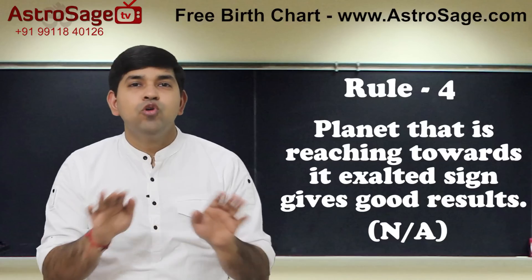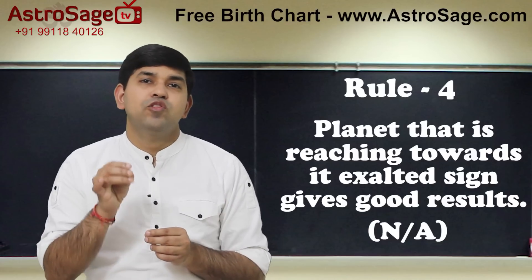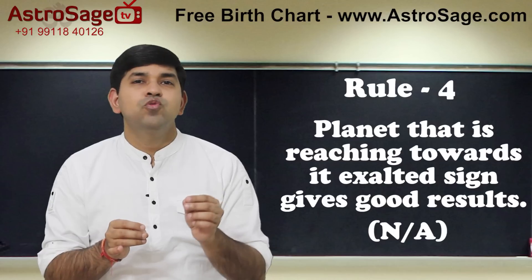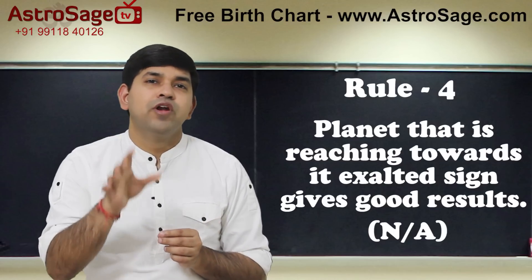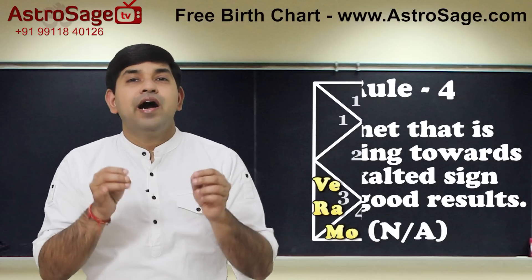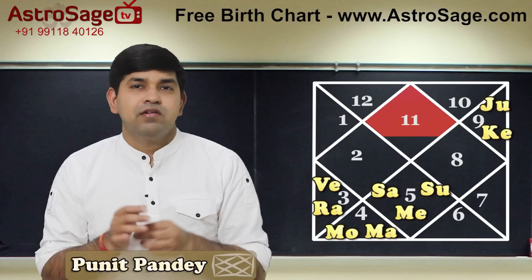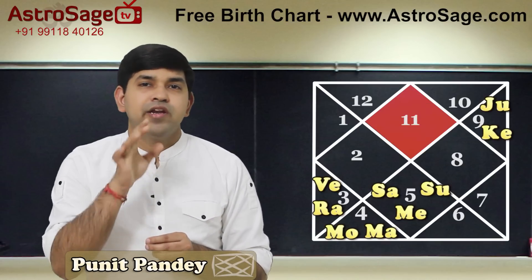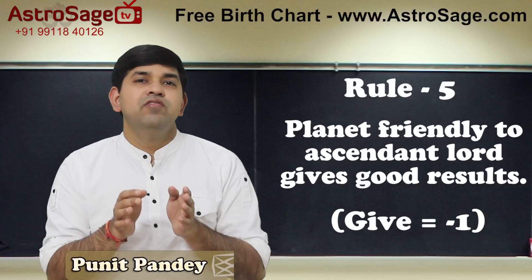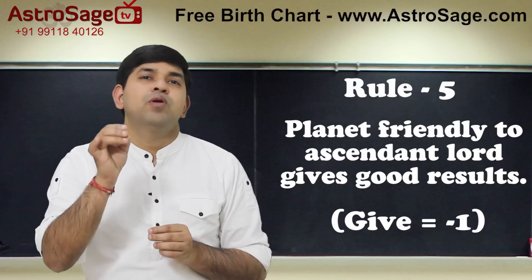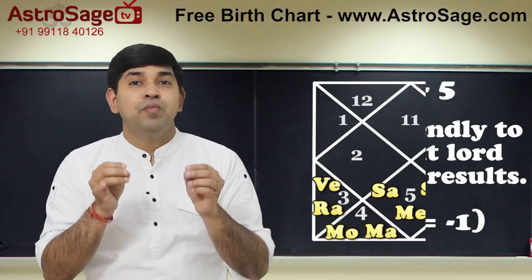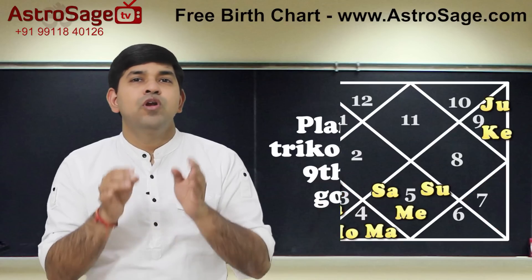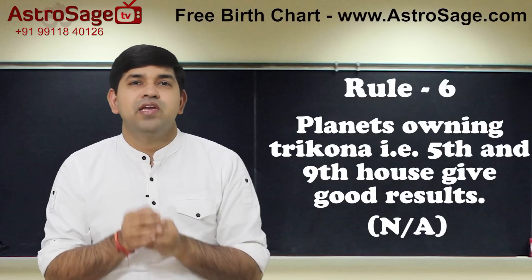Mars is not Uchabhalashi, meaning it is not moving towards its exalted sign, so rule number 4 is also not applicable. The ascendant lord is Saturn in our case, and Mars is not Saturn's friend, so let us give minus 1 to rule number 5. Mars is not the lord of Capricorn, so rule number 6 is also not applicable.